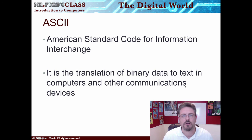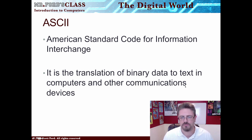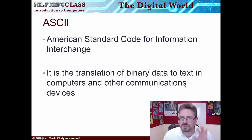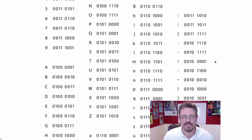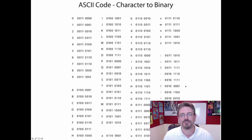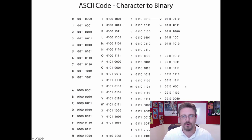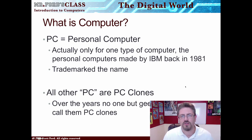The last thing I want to talk about in this video is something called ASCII — A-S-C-I-I, pronounced 'ASCII.' It stands for the American Standard Code for Information Interchange. It is the translation of binary data to text in computers and other communication devices. So our computers get binary information and ASCII is how it interprets it — it's kind of like Morse code for the computer. You should not have to memorize the character-to-binary ASCII code for your class. Okay, we're going to continue in our next video and start talking about what is a computer.